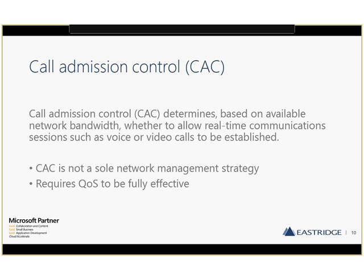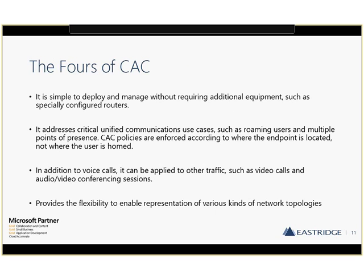Call admission control is not the only network management strategy — we'll talk about QoS as well. CAC is simple to deploy and manage without requiring additional equipment such as specifically configured routers. It addresses critical unified communication use cases such as roaming users and multiple points of presence, and policies are enforced according to where the endpoints are located. Besides voice, it can also ensure that all media calls such as video and audio conferencing sessions get the right QoS, and provides flexibility to work with different network topologies. It's a really important planning function for any IP-based telephony or media solution.